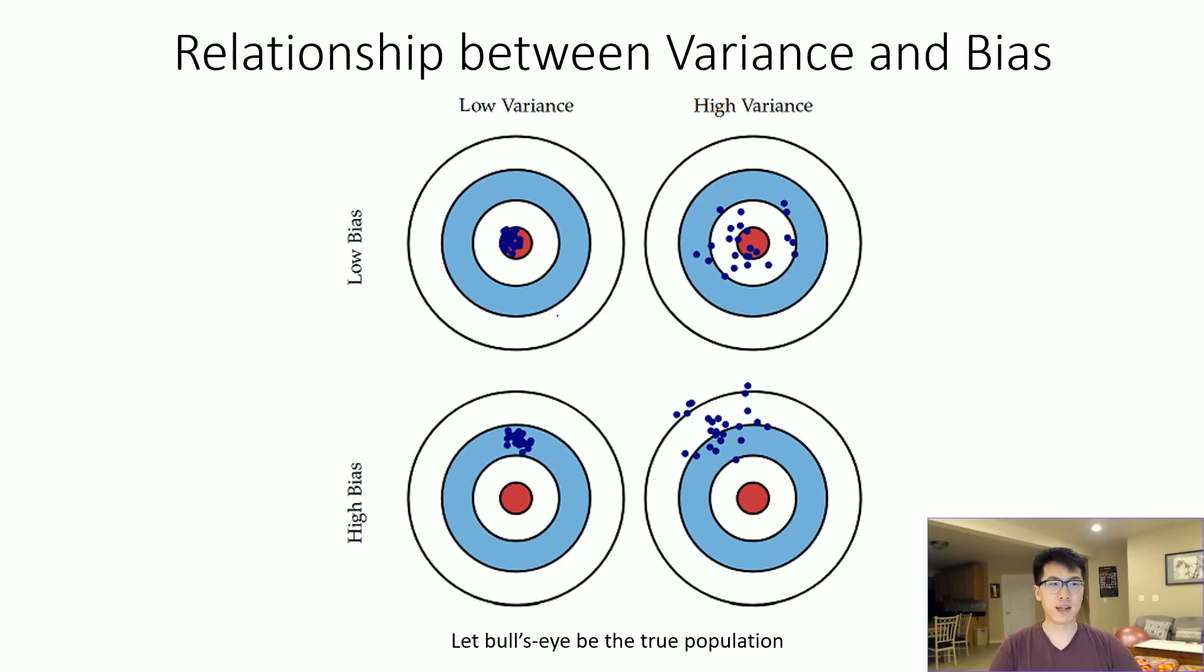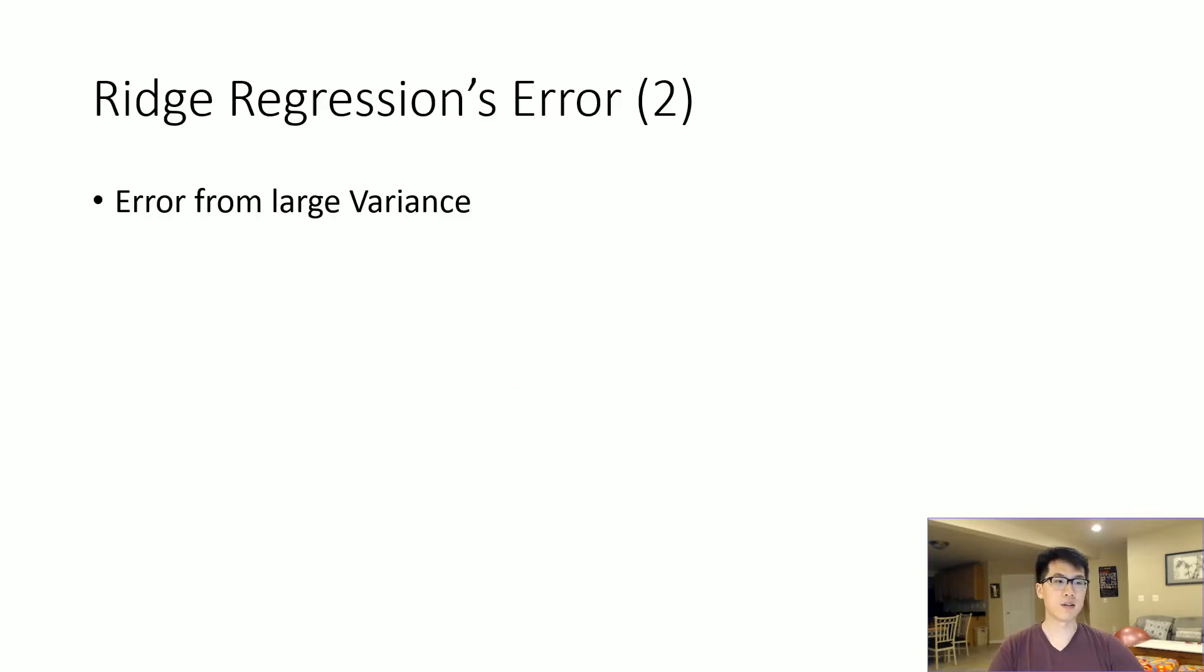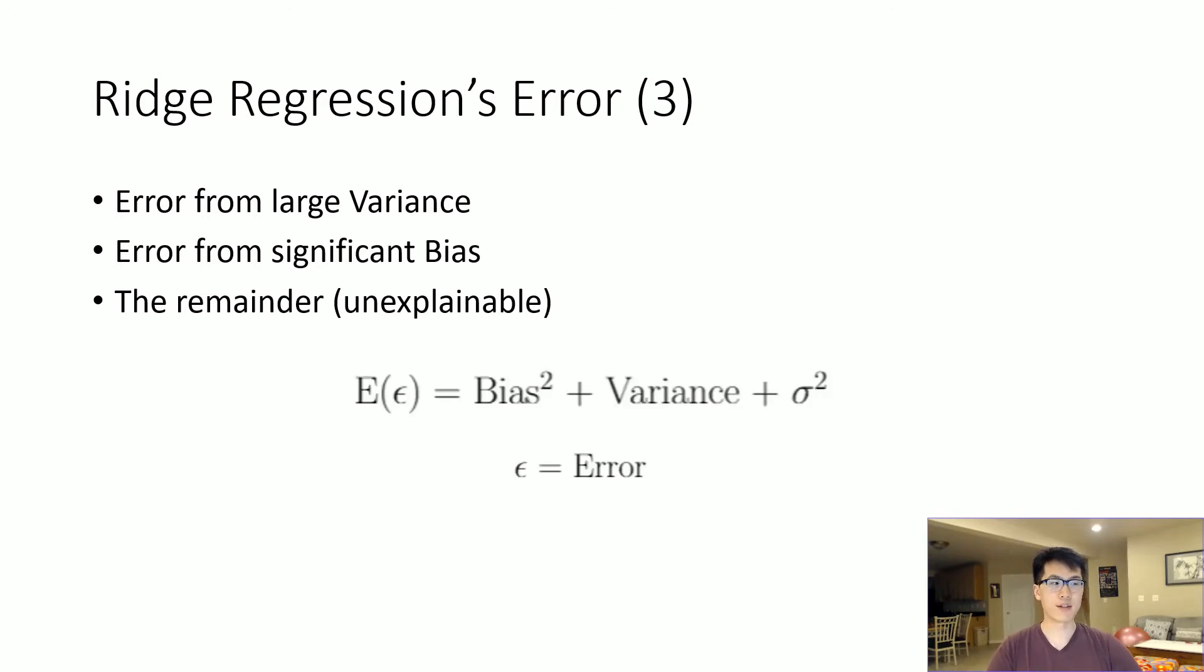Why do we need to know variance and bias? Because these all add up to the error. We have error from large variance, error from significant bias, and unknown errors. This all adds up to an expected error value that contains all the uncertainty involved with this model.